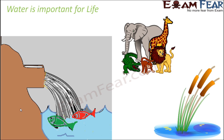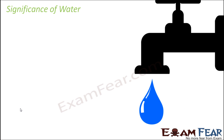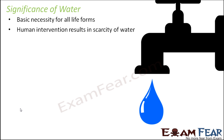Without water, life cannot exist on this earth. If the water in a river or pond gets polluted with some harmful or toxic substances, all the organisms living in that water end up dying, because they are all directly dependent on water. Aquatic organisms receive oxygen for their survival which is present in dissolved form in water. There are so many aquatic plants which get all their minerals and nutrients from water.